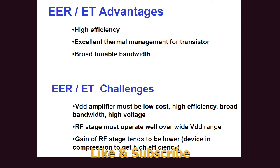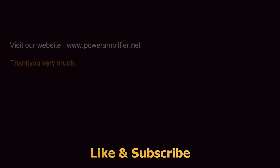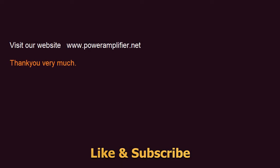The RF amplifier must also be able to operate over a wide VDD range, from high VDD to low VDD. Gain is also very important, especially for EER, as the gain is reduced when the amplifier is operated close to saturation. However, the highest efficiency can be obtained in EER.